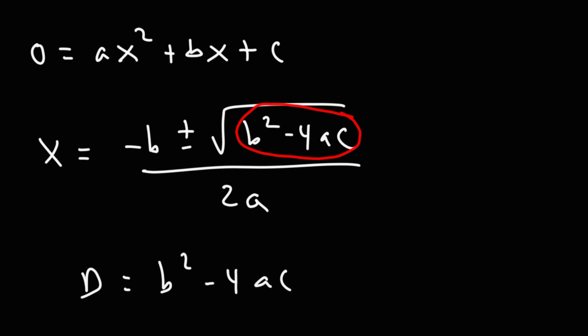When the discriminant is positive (greater than zero), you have two real solutions. If the discriminant equals zero, you have one real solution. If it's negative (less than zero), you have two imaginary solutions.